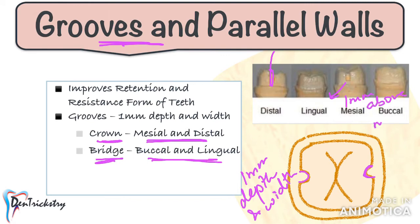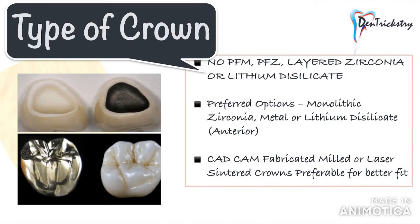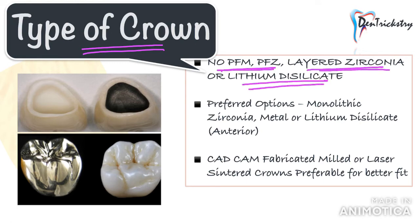Next, let us discuss the best type of crown to use in such cases. The commonly used crowns are metal, PFM, zirconia, and lithium disilicate. There is absolutely no way that you can give a PFM, PFZ, or any other layered crown, because these crowns have multiple layers — for example, a PFM has a metal and a porcelain layer — and therefore require more preparation. A monolithic crown, whether zirconia, lithium disilicate, or even metal, should be preferred in such patients.